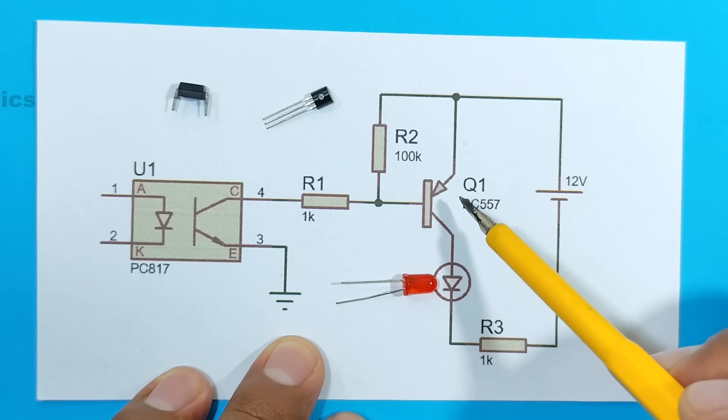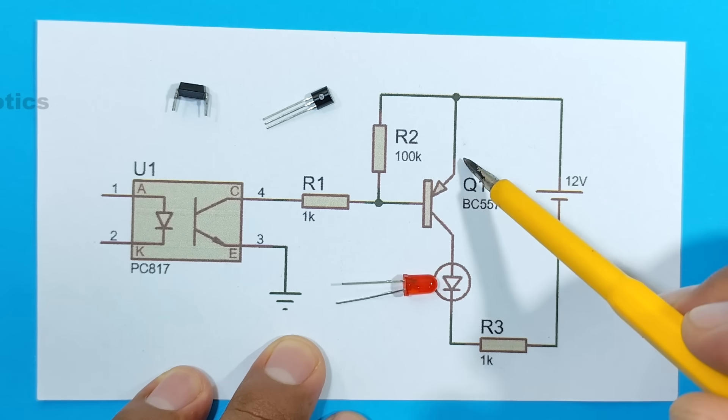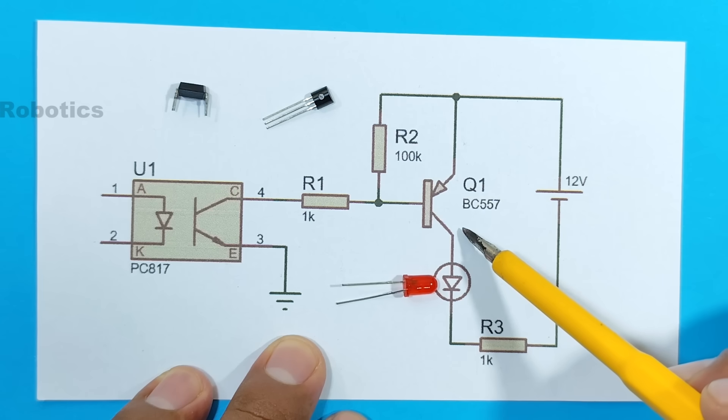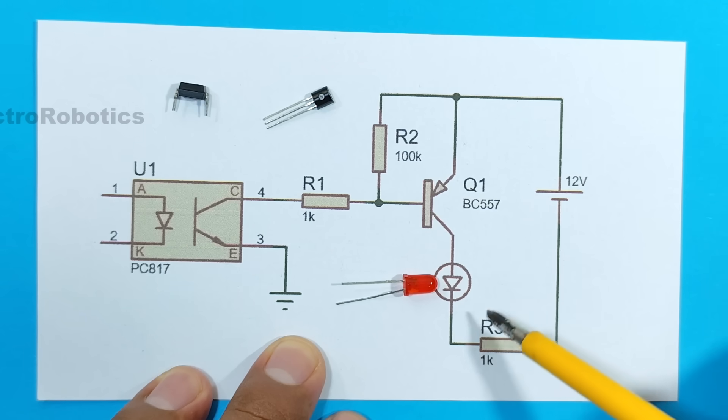Now, how would the transistor be connected? The emitter would have to be connected directly to positive. In this case, we're using 12 volts. As for the collector, the LED would have to be connected there, along with its protection resistor to negative.